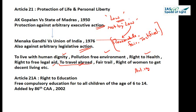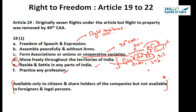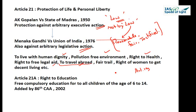To clarify the distinction: Article 19(1)(d) gives the right to move freely within the territory of India, while the right to travel abroad is covered under Article 21. Article 21 also includes the right to a fair trial in courts and the right of women to get decent living, among other inferred rights.